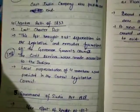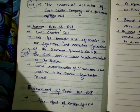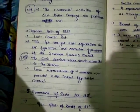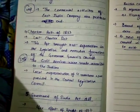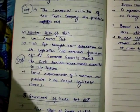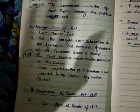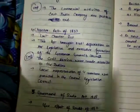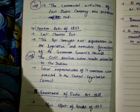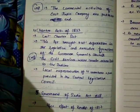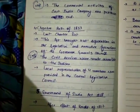So what is the Charter Act of 1853? The first charter act was established in 1823, and this act was the last charter act. What this act actually did was it brought about the separation of the legislative and executive functions of the Governor General's Council.